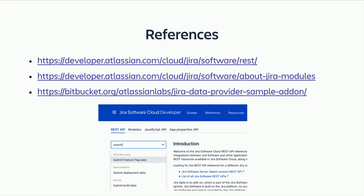Finally, here are some references — I'm assured the slides will be available afterwards. The first link is our REST APIs, which document the four APIs and describe what the payloads are. The second is the corresponding Connect app module for each API. And third, we have a sample add-on you can download to see how easy it is to get started building a Connect app. It's actually not that hard. The app also lets you call the API and send in JSON payloads so you can see what happens.